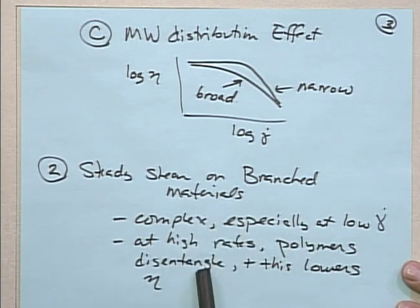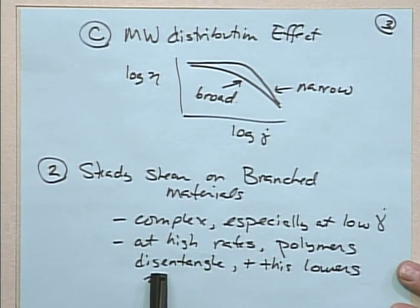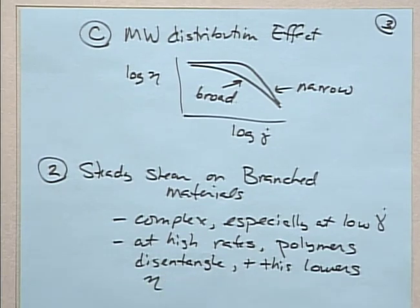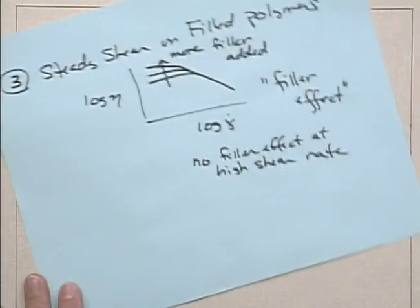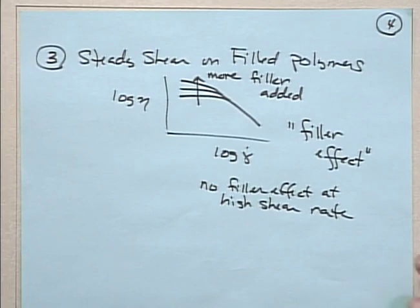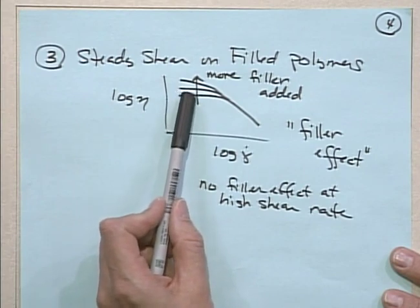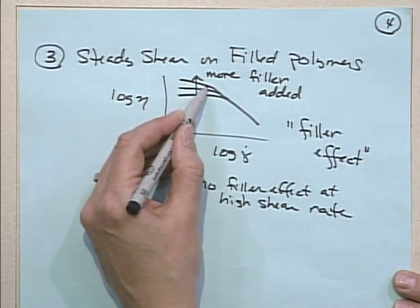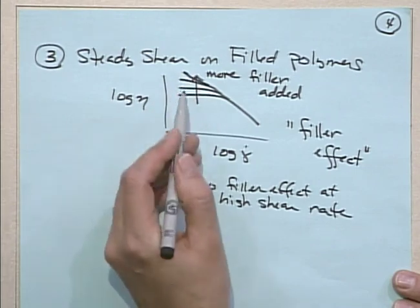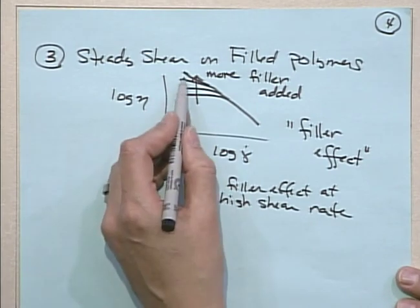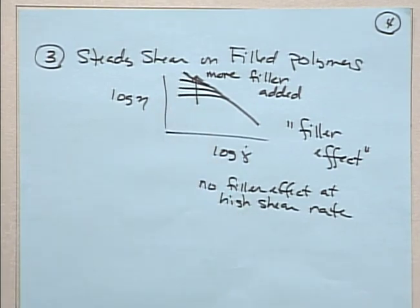We talked about the effects that different changes in material structure can bring about. For branched materials, it's quite complex but mostly related to the ability to disentangle. When you have really long side branches, you have entangling between the different chains and they're very difficult to disentangle. Once they disentangle, there's less of an effect. We also talked about filled polymers - filled polymers change the level of the zero shear viscosity and make it turn upward a bit, towards having a slope of minus one at low shear rates. So that was steady shear.